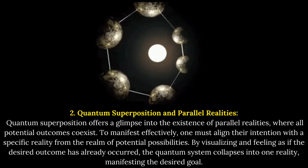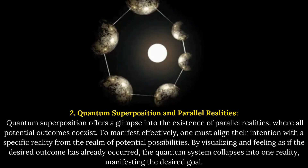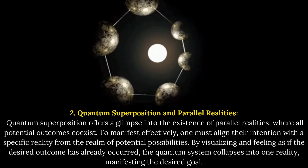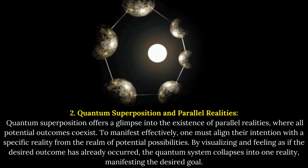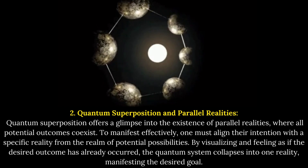Quantum Superposition and Parallel Realities. Quantum superposition offers a glimpse into the existence of parallel realities, where all potential outcomes coexist. To manifest effectively, one must align their intention with a specific reality from the realm of potential possibilities. By visualizing and feeling as if the desired outcome has already occurred, the quantum system collapses into one reality, manifesting the desired goal.